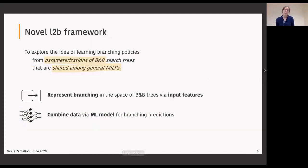We want to explore the idea of learning branching policies from parameterization or descriptions of branch and bound search trees which we believe are shared among general MILPs. In order to do that we'll need to represent the branching problem in this higher order space, define this parameterization via input features, and combine this data from the optimization in a machine learning model. In our case it will be a deep neural network architecture in order to get a branching policy.